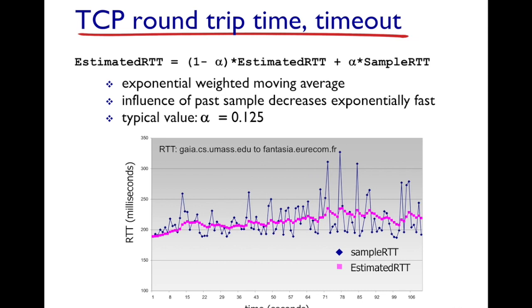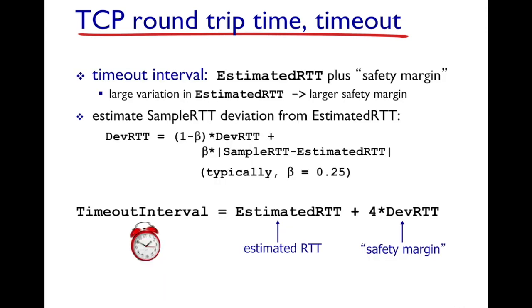Now that we have estimated the RTT, we want to know how to use it to actually set the timer value. We take the estimated RTT and calculate the deviation in the RTT, called DevRTT, which captures how the sample RTT varies over time. This is also measurement-based, so the deviation will change over time. The formula for estimating DevRTT involves taking the absolute difference between the sample RTT and the estimated RTT.